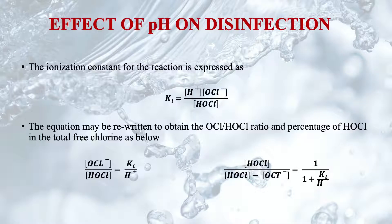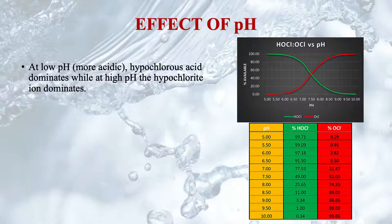Hypochlorous acid dissociates into hydrogen ions and hypochlorite ions. The ionization constant for the reaction is expressed in its usual form. The equation may be rewritten to obtain the OCl⁻/HOCl ratio and the percentage of hypochlorous acid in the total free chlorine. The ratio of hypochlorite ion to hypochlorous acid equals Ki/[H], where Ki is the ionization constant and [H] is the concentration of hydrogen ions. The percentage of hypochlorous acid with respect to total free chlorine is written as 1/(1 + Ki/[H]).